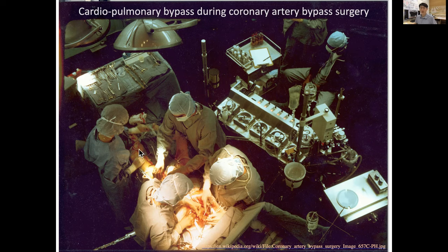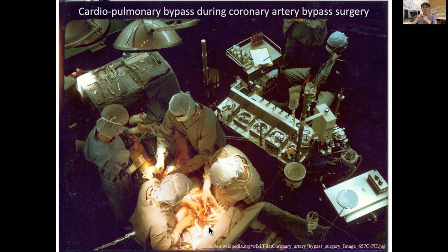The patient's left leg is exposed to collect and harvest the saphenous vein, which will be used as a bypass conduit — a naturally occurring bypass. On the upper right side, you can see the heart-lung machine, because this surgery involves stopping the heart to perform the anastomosis, putting together this saphenous vein as a bypass graft connecting downstream of the narrowed coronary artery to the aorta. During this time, the patient's heart and lung function is taken over by the cardiopulmonary bypass.